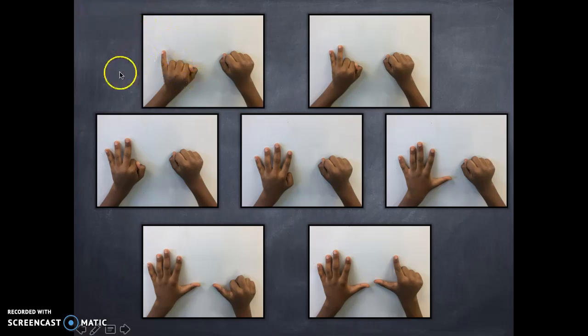So, here we go. When I tap on the picture, we're going to start with 1. Go! 1, 2, 3, 4, 5, 6, 7. Excellent job.